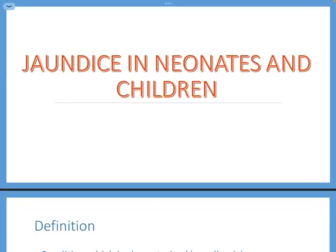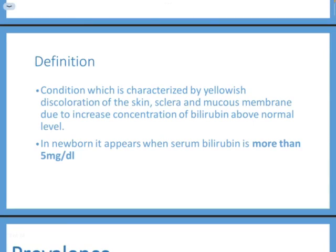We will now discuss jaundice in neonates and children. Jaundice is a clinical sign that means yellowish discoloration of skin, sclera, and mucous membranes, caused by accumulation of bilirubin above the normal range. In a newborn, you can start to notice signs of jaundice in the sclera when bilirubin level reaches 5 mg/dL. The sclera is the first location where you observe jaundice and also the last place from which jaundice disappears.